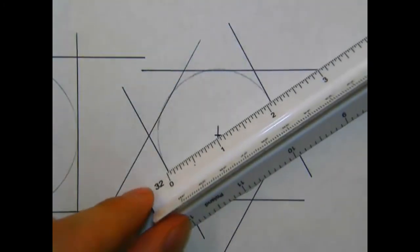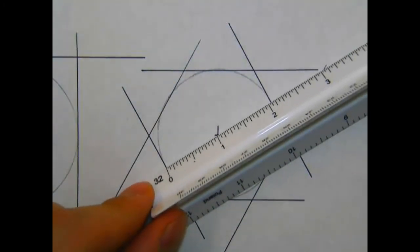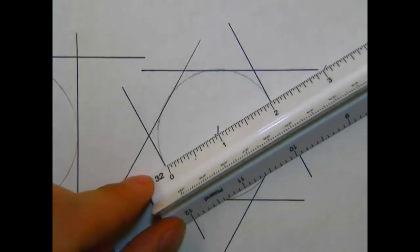Once finished, you can go in and darken the desired parts of your line. What you'll see,